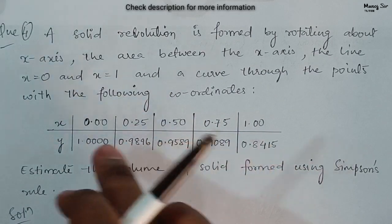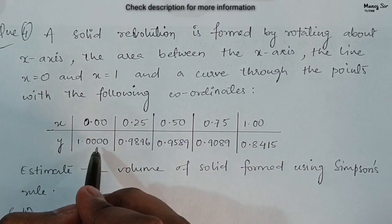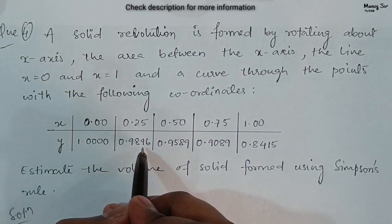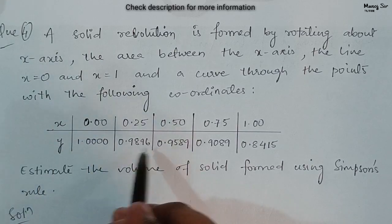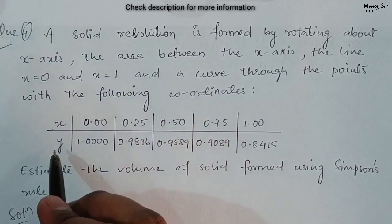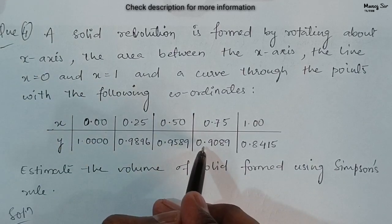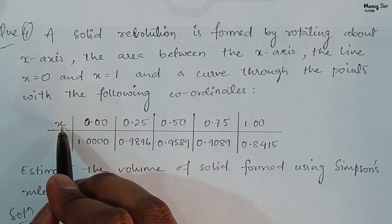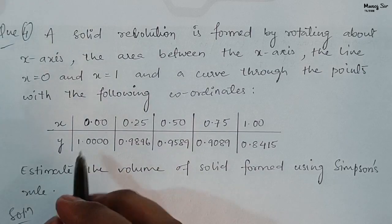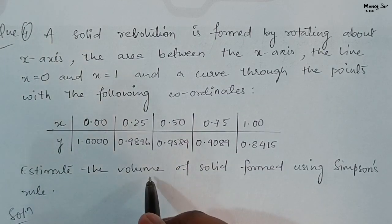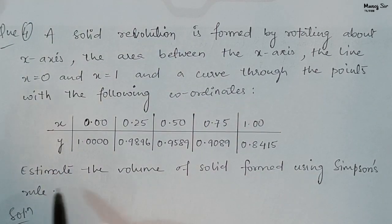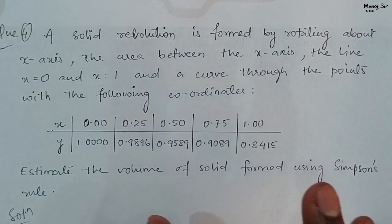We have x values and y values. When x equals 0, y equals 1. When x equals 0.25, y equals 0.9896. When x equals 0.5, y equals 0.9589. When x equals 0.75, y equals 0.9089. When x equals 1, y equals 0.8415.